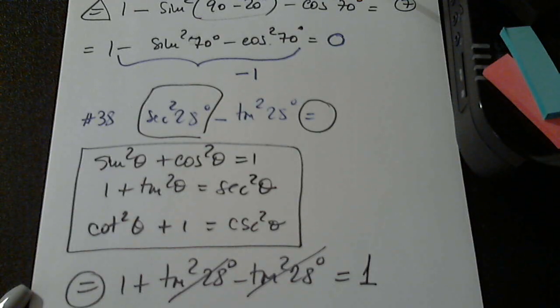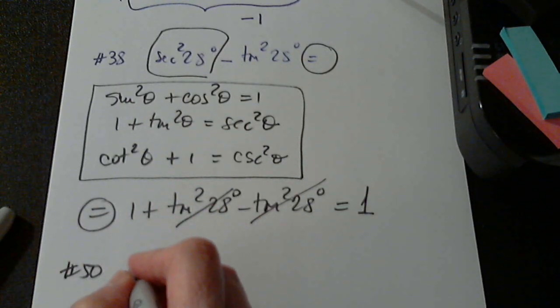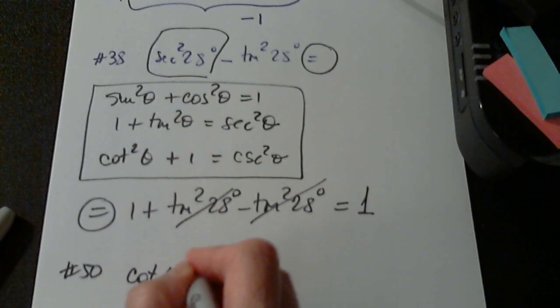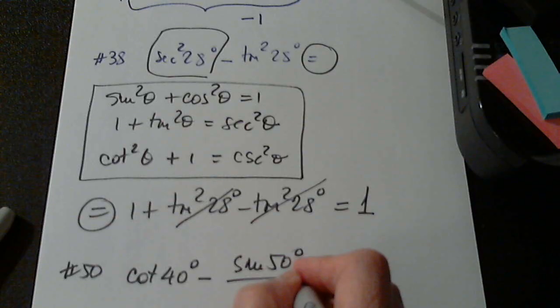We do 50. 50, where are you 50? I see it. No, or 50. I was looking at 52. Sorry. So 50. So we have cotangent 40 degrees minus sine 50 degrees over sine 40 degrees.